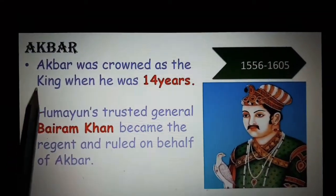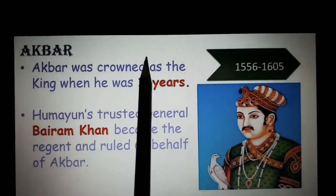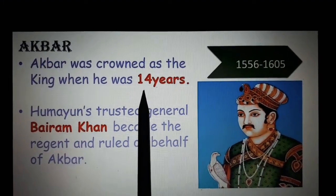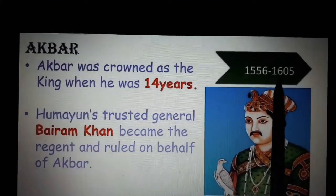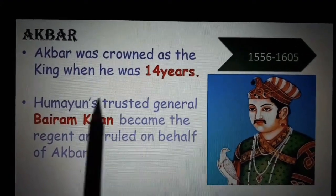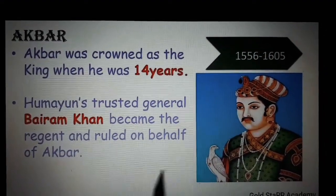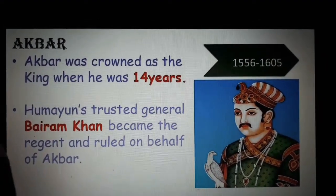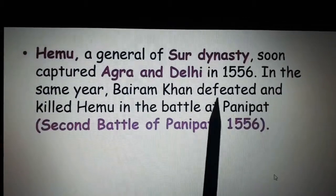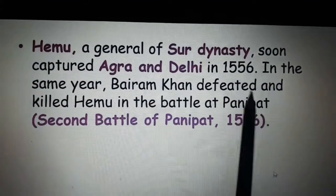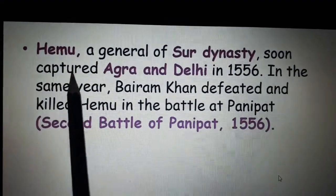The next empire is Akbar. Akbar was crowned as king when he was just 14 years old, ruling from 1556 to 1605. Humayun's trusted general Bairam Khan became regent and ruled on behalf of Akbar. Bairam Khan defeated and killed Hemu in the Second Battle of Panipat in 1556 and captured Agra and Delhi.